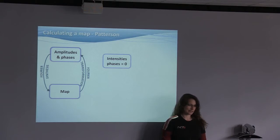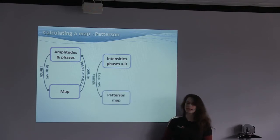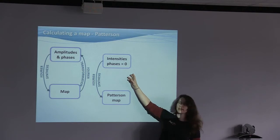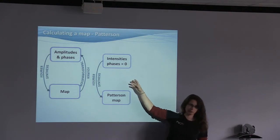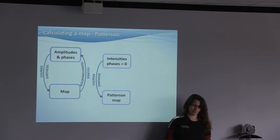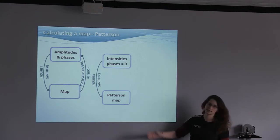This can be translated: amplitudes and phases give you a map. But at the beginning of our experiment, before we start phasing, we don't know the phases yet. We only know the intensities or the amplitudes we can derive from them. Now, what happens if we do a Fourier transform where we set all phases to zero and use the intensities instead of the amplitudes?